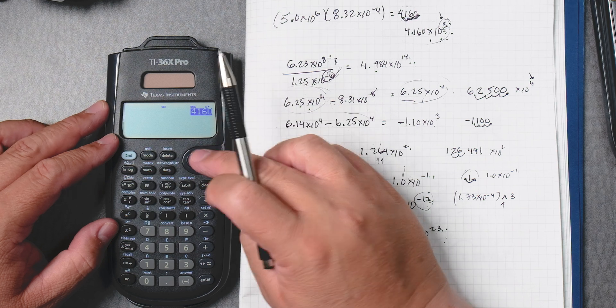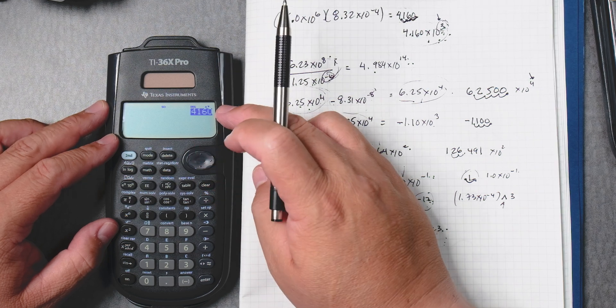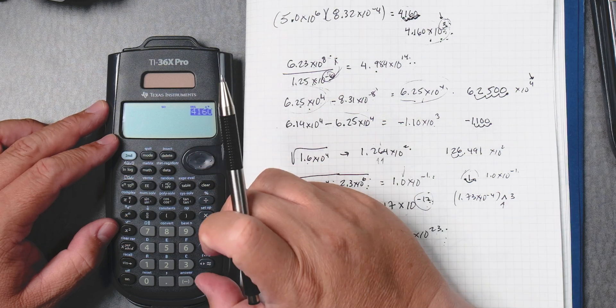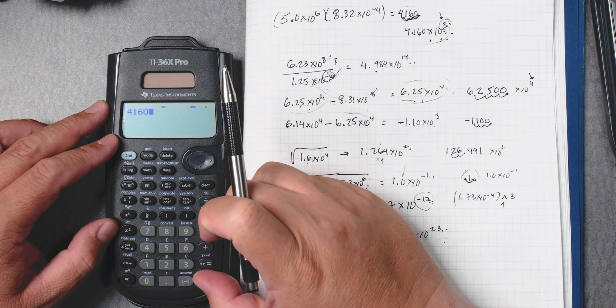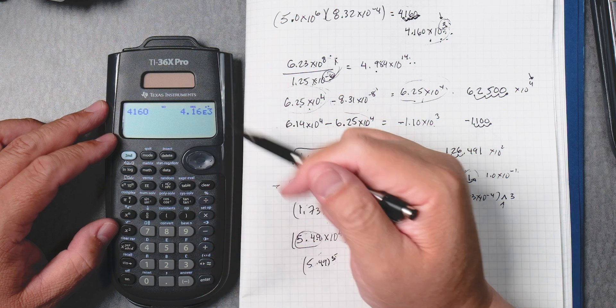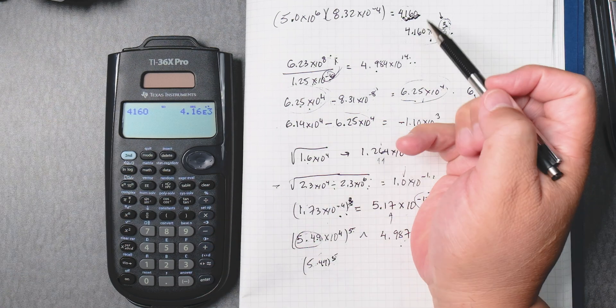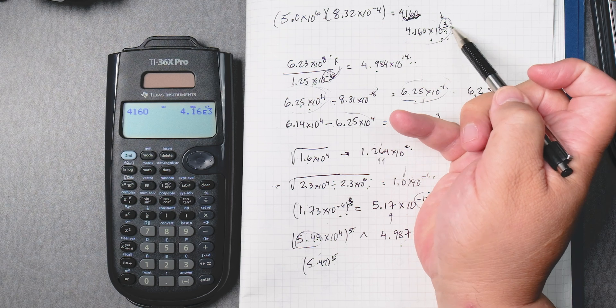We can go back, we can go up by the up arrow, and then you can see that's the number. Let's see if we press enter, it gives us, yes, it will give us the scientific notation. 4.16 times 10 to the third.